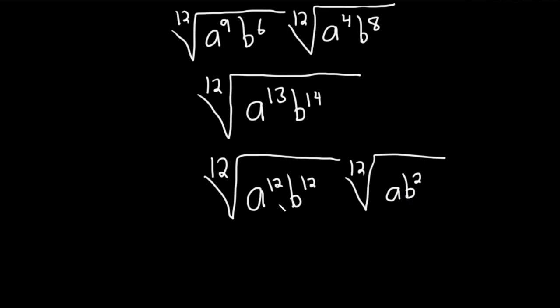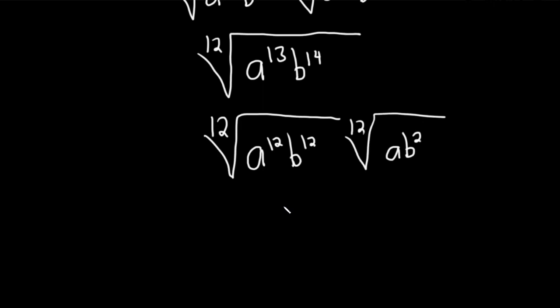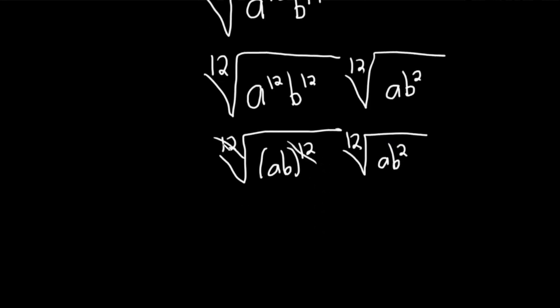These go away. Let me just show you one more step before showing you they go away. You could technically write it like this. a b to the 12th. That's what you're supposed to do if you wanted to show all the work. Because now these cancel.